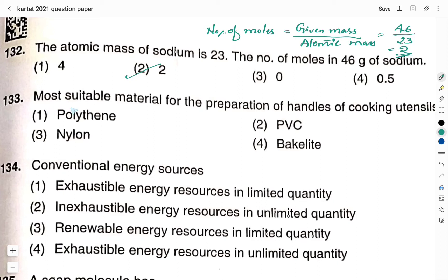Question number 133: most suitable material for the preparation of handles of cooking utensils. Option 1: polythene. Option 2: PVC. Option 3: nylon. Option 4: bakelite. The right answer is option 4, bakelite. Question number 134: conventional energy sources. Option 1: exhaustible energy sources in limited quantity. Option 2: inexhaustible energy resources in unlimited quantity. Option 3: renewable energy resources in limited quantity. Option 4: exhaustible energy resources in unlimited quantity. Conventional energy sources are exhaustible energy resources present in limited quantity. Therefore the right answer is option 1.